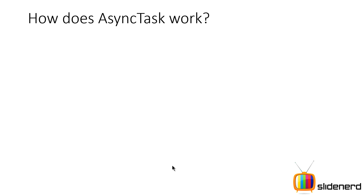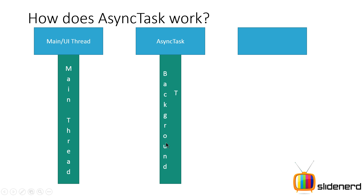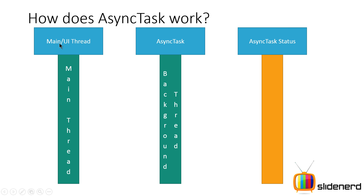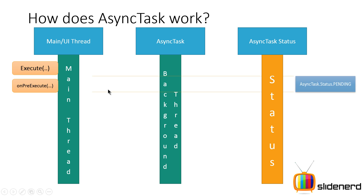Let's look at how AsyncTask actually works. You have the main thread on one side and the background thread on the other. AsyncTask works on both to some extent. From the main thread, you use the AsyncTask object and call execute on it. As soon as you do that, onPreExecute is called on the main thread, where you set up things like a progress bar or other variables needed for your task.